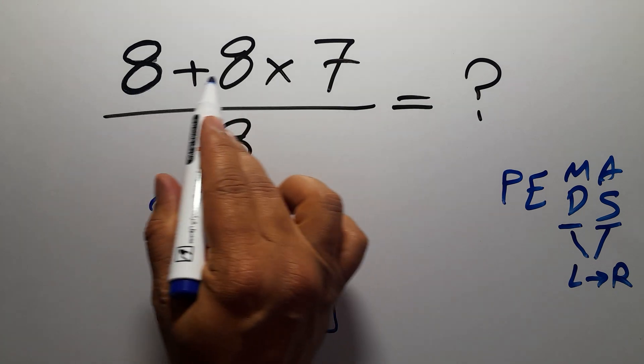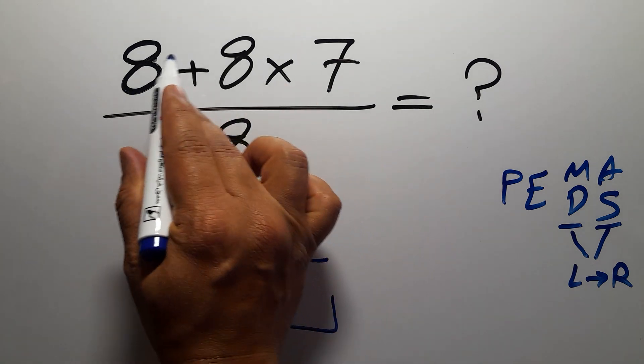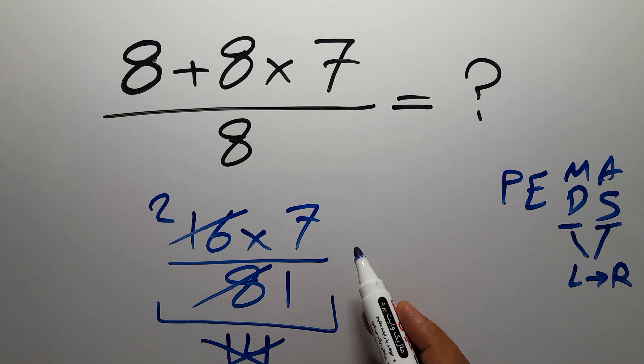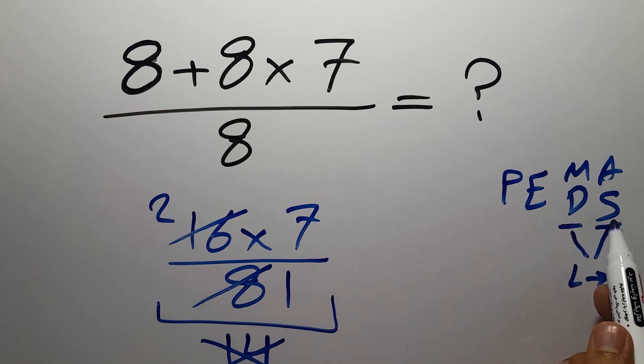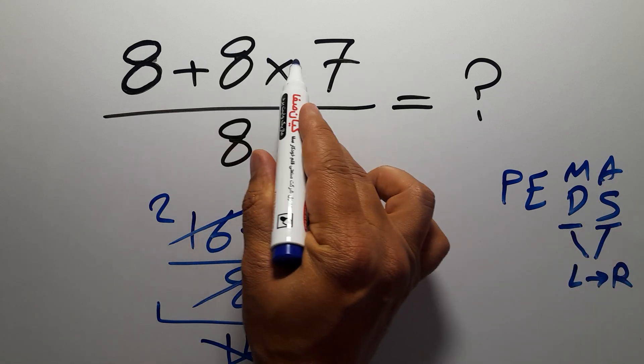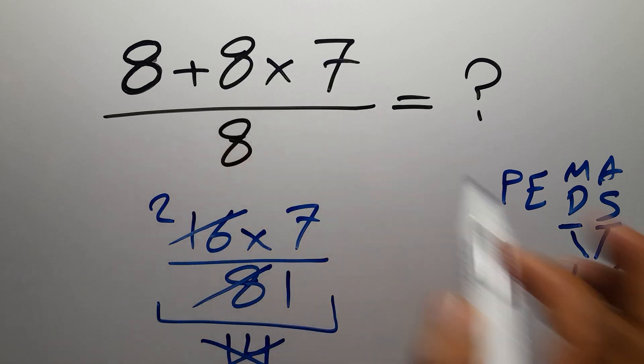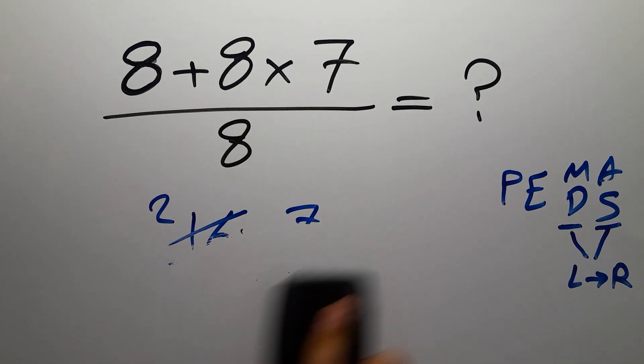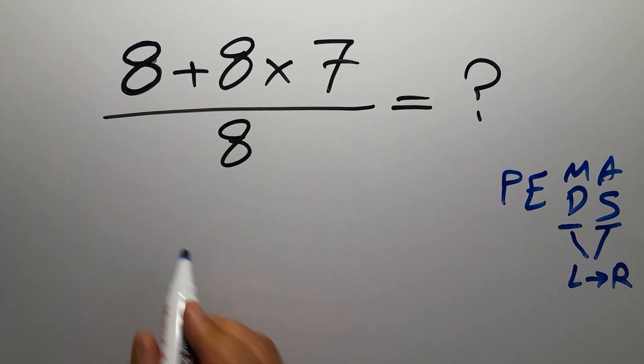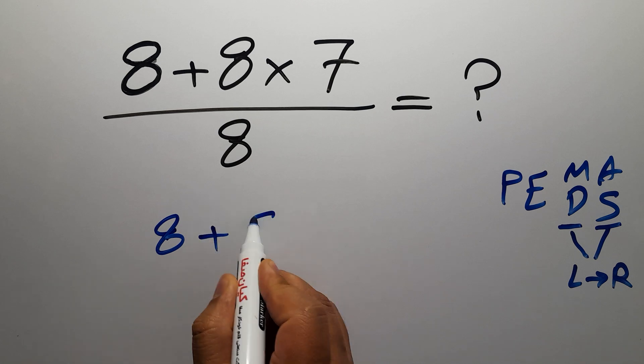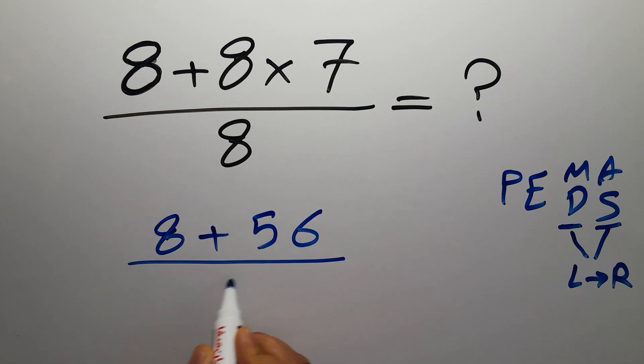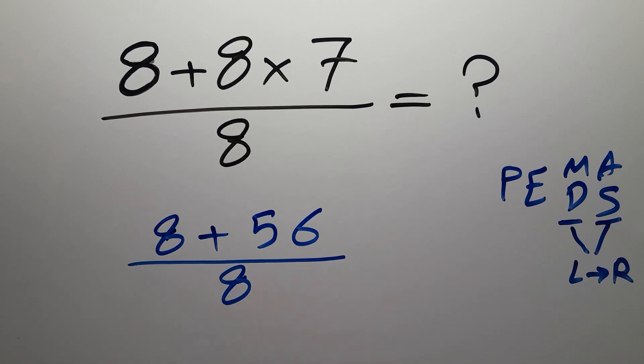in the numerator we have one multiplication and one addition. In PEMDAS, multiplication comes before addition, so first we have to do this multiplication: 8 times 7, which gives us 56. So 8 plus 56 over 8.